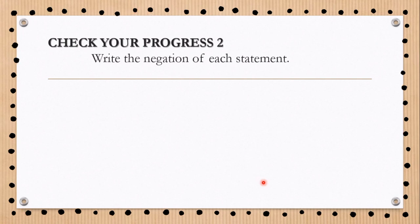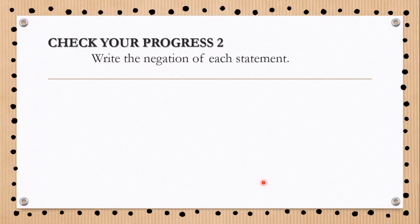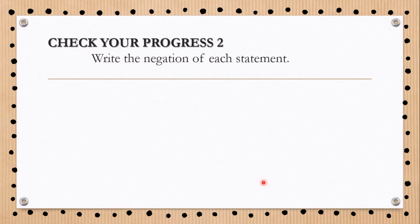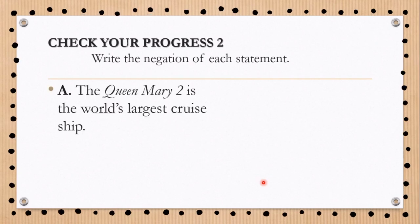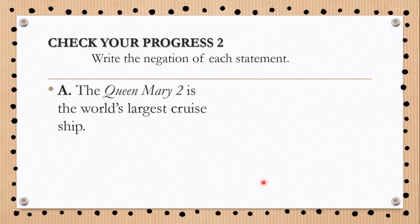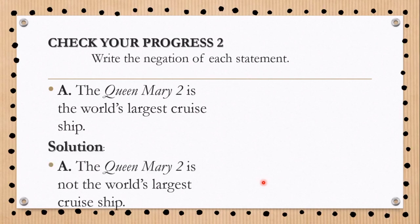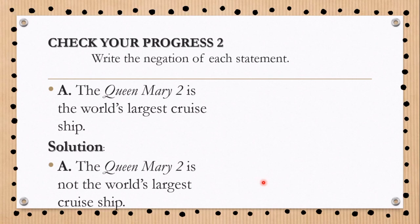Another example: Check your progress. Write the negation of each statement. A: The Queen Mary 2 is the world's largest cruise ship. Solution: The Queen Mary 2 is not the world's largest cruise ship.